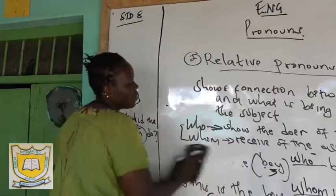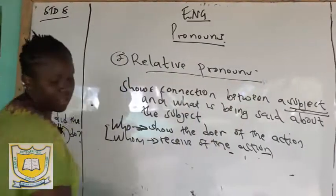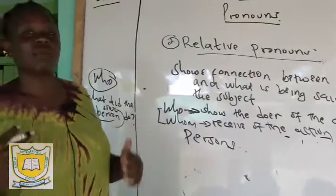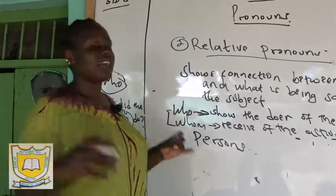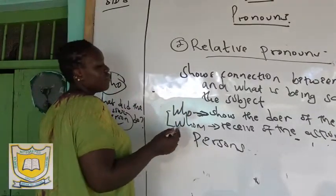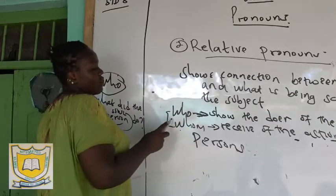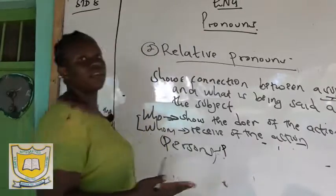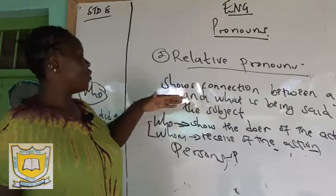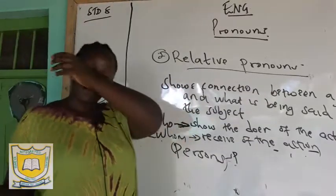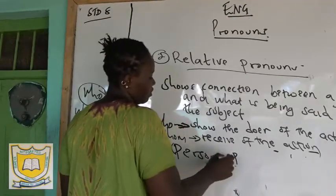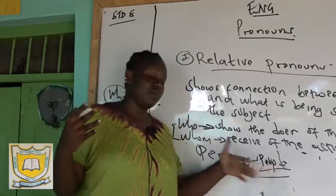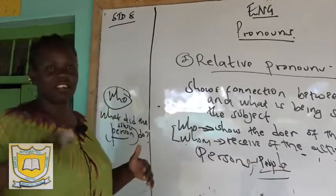There is something else about who and whom: they are used with persons. We cannot use who and whom when talking about animals, things, ideas, or places. Make sure the subject in your sentence is a person. A relative pronoun shows the connection between a subject and what is being said about the subject — and for who and whom, that subject must be a person.